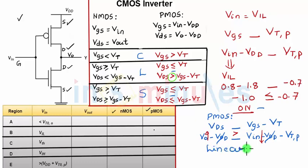So we saw that while finding VIL, which is region B, my NMOS transistor is in saturation region and my PMOS transistor is in linear region. Let's quickly go ahead and find out the region of operation when my input voltage is equal to switching threshold.